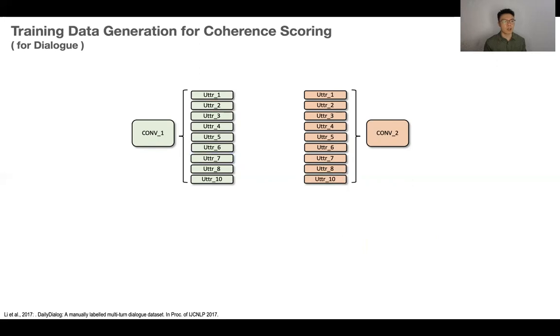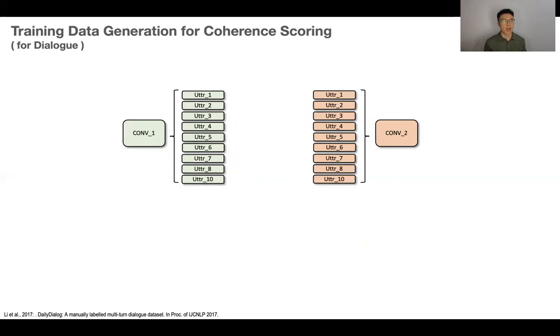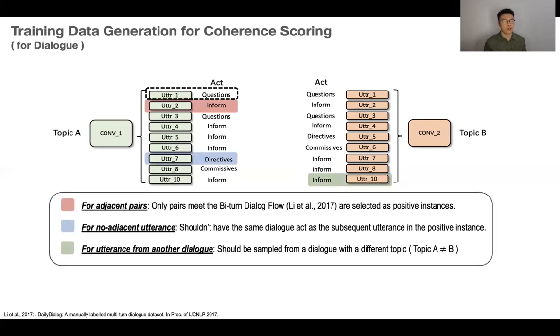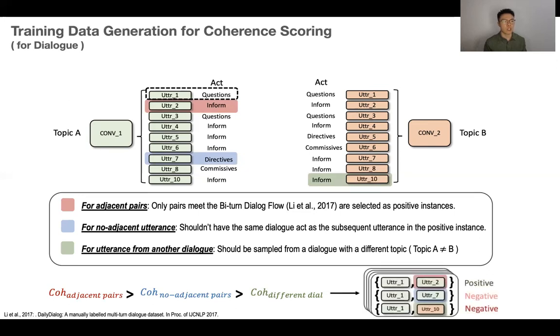Some publicly available dialogue corpora contain more attributes, like dialogue acts and the label of topic each dialogue belongs to. We think about utilizing them to further generate utterance pairs with more distinctive orders. As illustrated here, we pick the utterances to form the utterance pair with several rules. With these rules, the coherence ordering still holds, but with larger distance. And finally, we can generate large-scale utterance pair-ordered training corpora for the coherent scoring prediction.